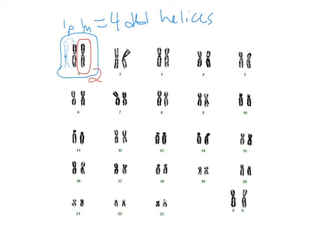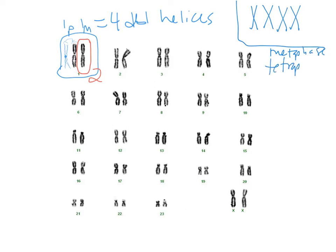This is for a diploid organism. For a tetraploid organism, we would have four copies in each one. So if this was a tetraploid organism, it would have how many homologues? Four homologous chromosomes. You'd see something like that in a karyogram. So at metaphase, a tetraploid — how many double helices is that? Eight. Eight double helices.